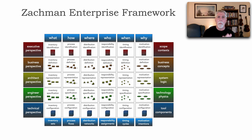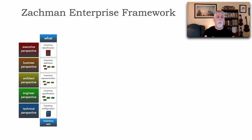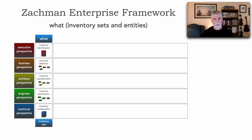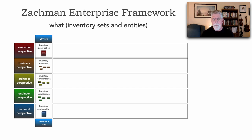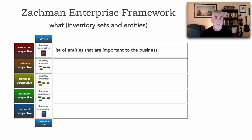One advantage I've seen with Zachman is that the models tend to be small and well-scoped, so I can look at one grid for a specific purpose. Let's take a look at what each of these models contains within each perspective — it helps give us a sense of what's modeled within the Zachman enterprise framework. Let's start with the 'what' piece, which is all about inventory sets and entities — basically lists of things.